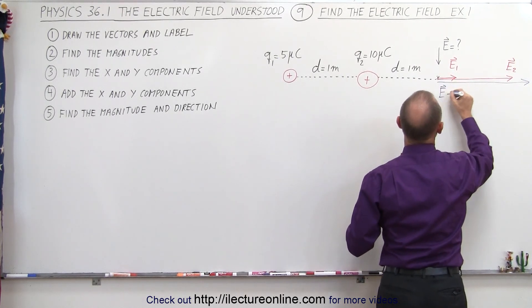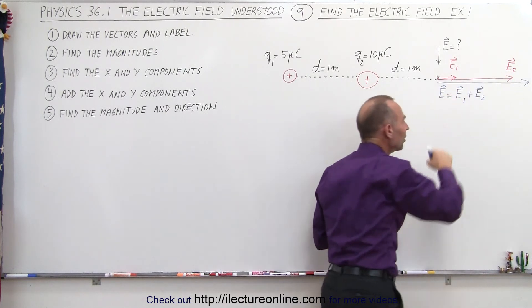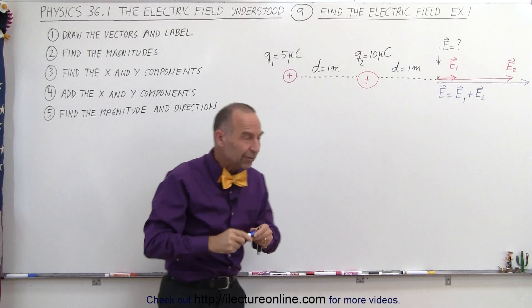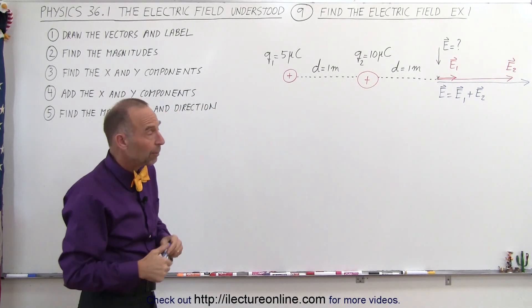So E will simply be equal to the vector sum of E one plus E two. And notice if you do this first, then you have a visual aspect of what you're trying to do that makes the rest of the problem a lot easier.